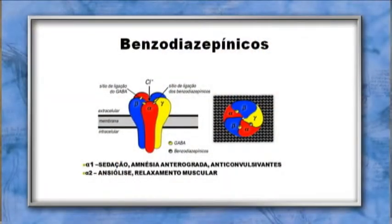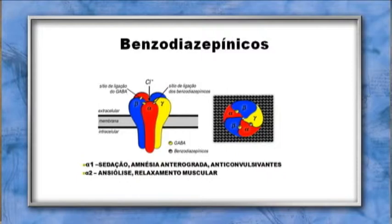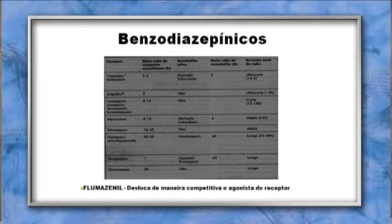Alguns efeitos dos benzodiazepínicos estão correlacionados com subunidades específicas da unidade pentamérica do receptor. Acredita-se que haja pelo menos 20 unidades alfa formando esse receptor, concentradas em 8 famílias. Estudos mostram que sedação, amnésia anterógrada e efeito anticonvulsivante estão relacionados com a subunidade alfa-1; ansiolítico e relaxamento muscular com a alfa-2. Os benzodiazepínicos são classificados pela duração de ação em: ultracurta, curta, média e longa.